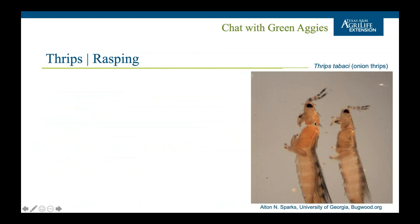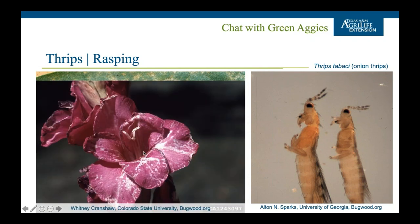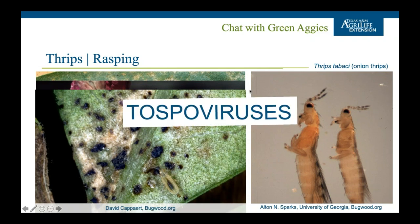Thrips have rasping, sucking mouthparts. The type of damage they cause is similar to sucking damage — you can see stippling and discoloration. On flowers you get more mechanical damage compared to a true sucking insect, because they're actually scratching at the leaf surface and then sucking up the plant juices. Some thrips, such as the Western flower thrips, will produce black spots which is their frass — essentially their excrement — depending on the size of the population.